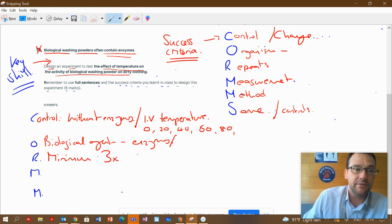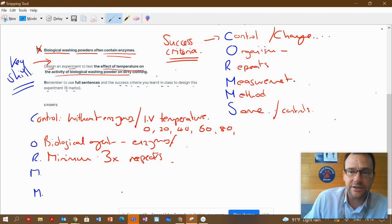Repeats, minimum three times. Some people said two, no, not enough. It doesn't tell you that there's an anomaly, which one's the anomaly. Minimum three repeats for every temperature. So zero you do three, twenty you do three, forty you do three, sixty you do three, eighty you do three at each temperature.